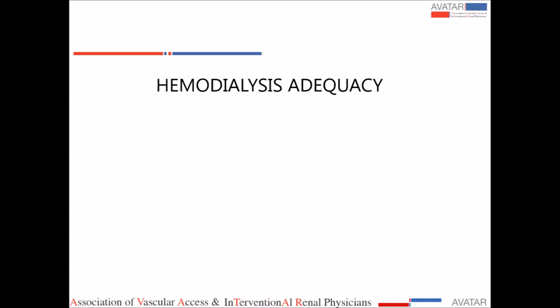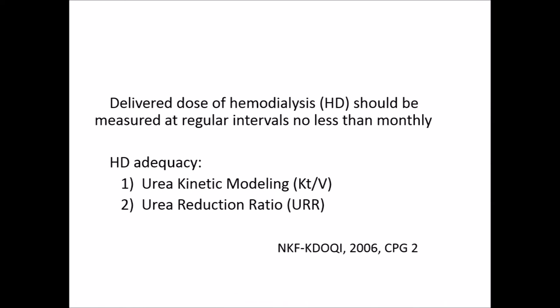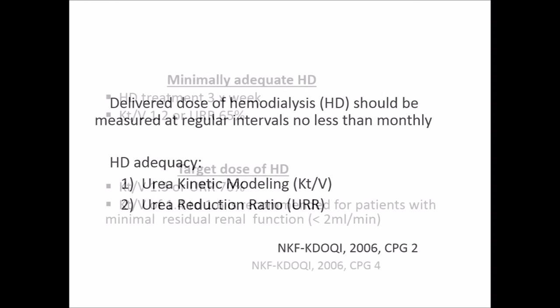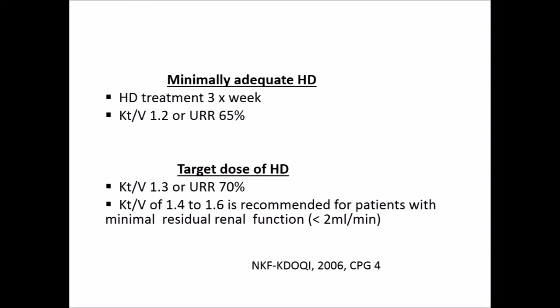Coming to hemodialysis adequacy — the delivered dose should be measured at regular intervals, either by measurement of KT or by calculating KT/V, or by calculation of the urea reduction ratio. Minimally adequate dialysis is three times a week with a KT/V of 1.2 or a URR of 65%. To achieve this, one should target a slightly higher dose — a KT/V of 1.3 and a URR of around 70%. In patients with minimal residual renal function, an even higher KT/V could be targeted.